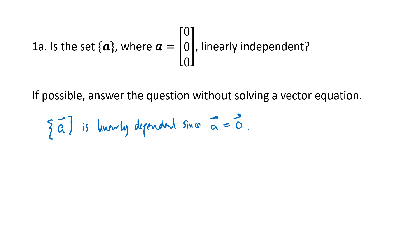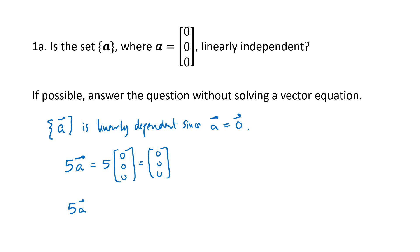Another way to see this: if I multiply that vector by any nonzero scalar — say 5 — then 5 times [0, 0, 0] equals [0, 0, 0]. So 5a = 0 is a dependence relation, because there's only one vector, there's only one scalar, and that scalar is not zero. So there are a couple of different ways to do this problem.